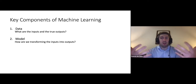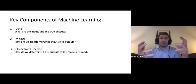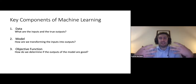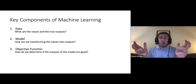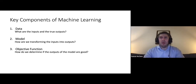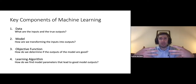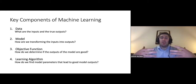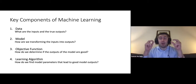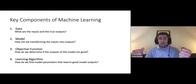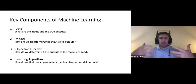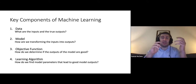How do we define what 'good' is in this context? To do that, we define something called an objective function — a mathematical formula for determining whether an output from our model for a particular input is good, given that we know what the true output was. Then, once we have this objective function and a way to figure out how good a prediction is, we need to find the model parameters that lead to good outputs. The way to find these parameters is called the learning algorithm.